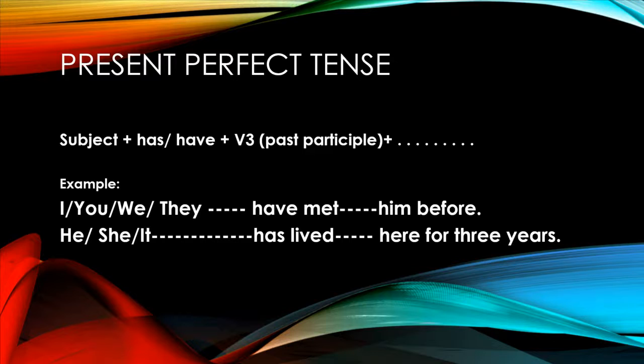The present perfect tense refers to an action or state that either occurred at an indefinite time in the past, or began in the past and continued to the present time. That means it is not finished yet—it has a result right now.